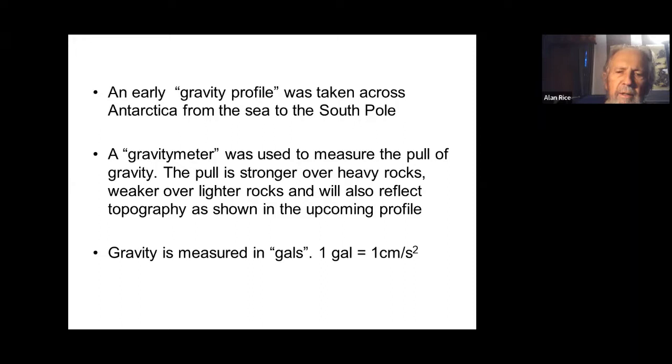Back to Jack's gravity profile taken from the sea to the South Pole. A gravity meter is used to measure the pull of gravity—the pull is strong over heavy rocks, weaker over lighter rocks, and also reflects topography. Gravity is measured in gals. One gal, for Galileo, is one centimeter per second squared, a unit of acceleration.